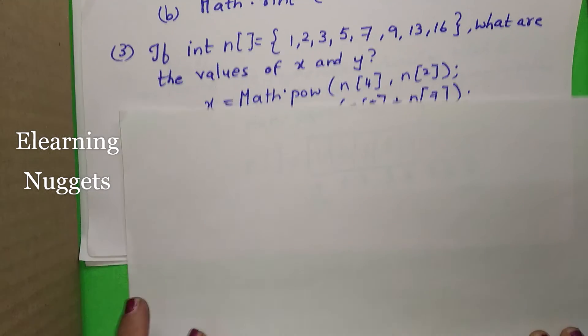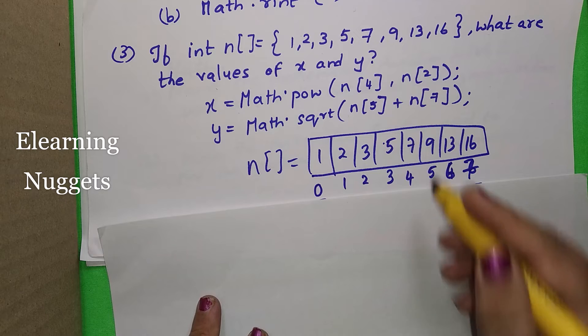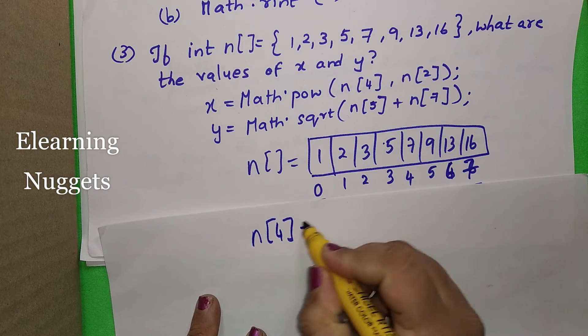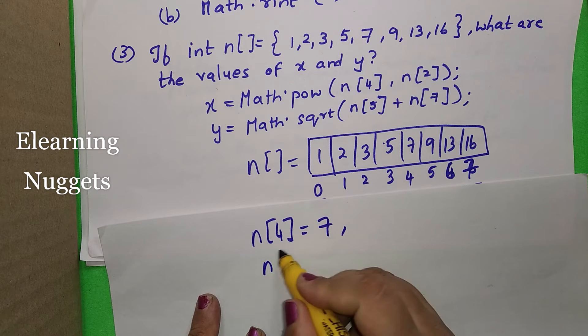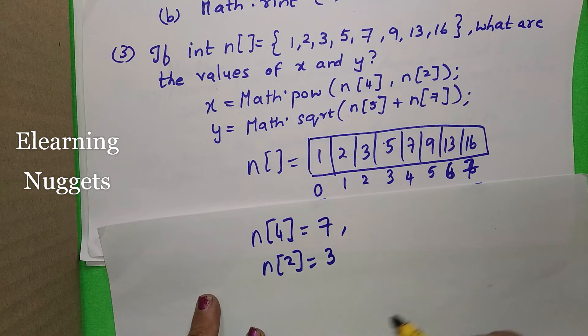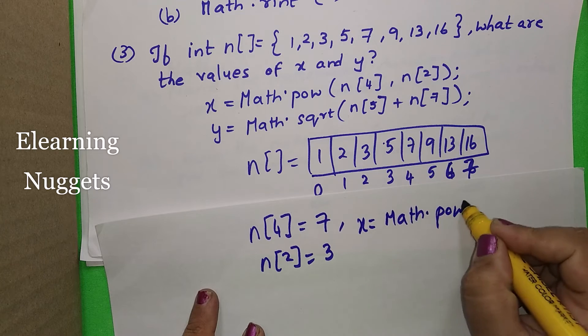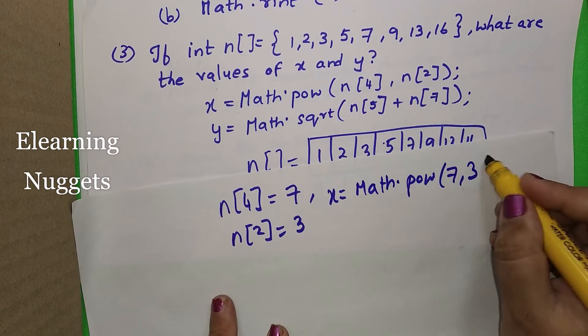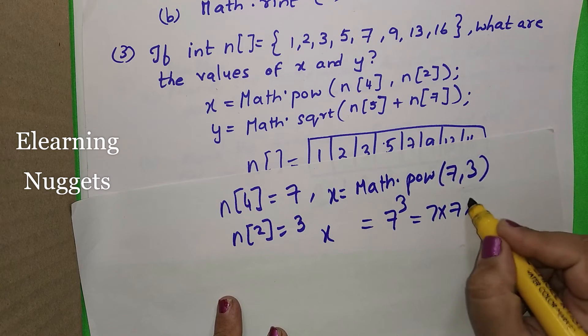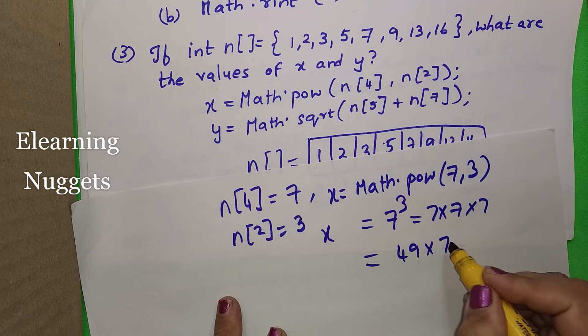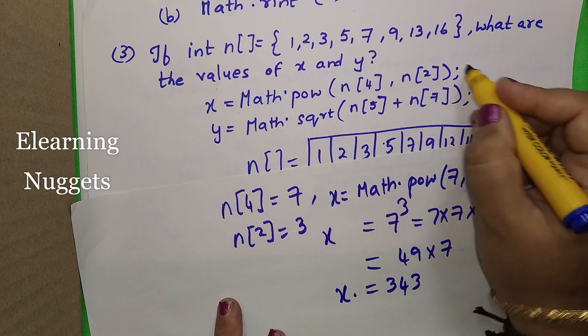Here the two questions that is asked here. Math dot power of n of 4 they have asked. What is n of 4 for me here? What is n of 4 here? You see it is 7 comma n of 2. n of 2 is how much? It is 3. That means it is x is equal to math dot power of 7 comma 3. 7 comma 3 means it is 7 cubed. That is equal to 7 into 7 into 7. That means that is 49 into 7. That is equal to 343. The value of x here is 343.